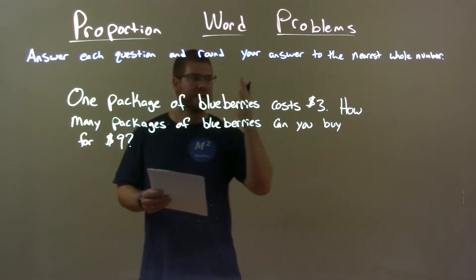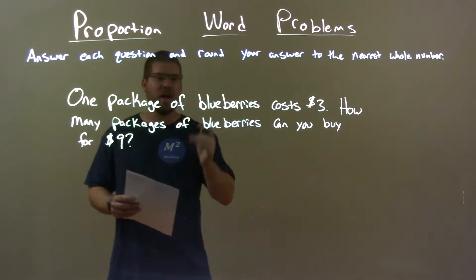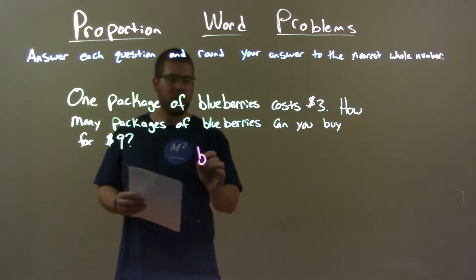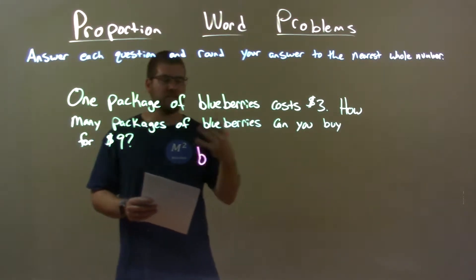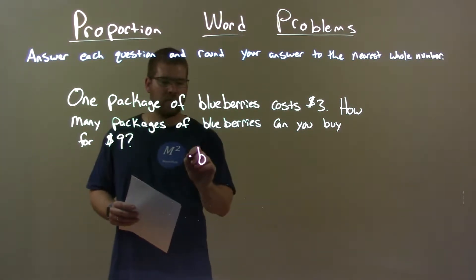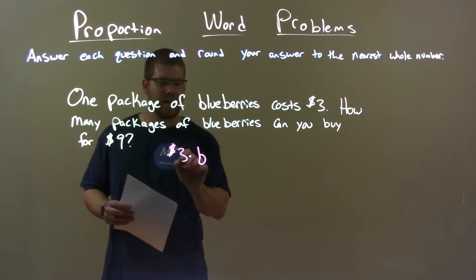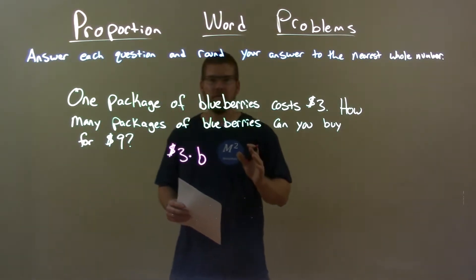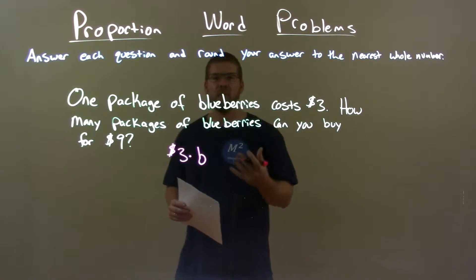What I want to do is put this as an equation. Let's let the letter B represent the number of packages of blueberries. They tell us that each one costs $3, so $3 times B represents the cost of buying a variable amount of blueberries.